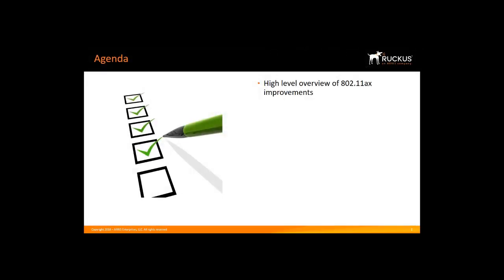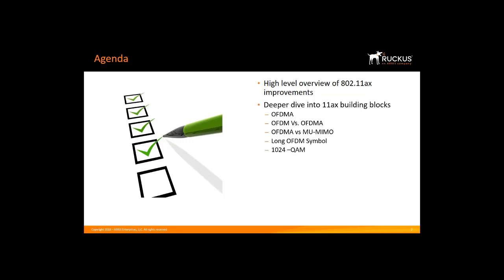We'll start with a high-level overview of the building blocks of 11ax, then drill down deeper into each. This will include a discussion on OFDMA, OFDM vs. OFDMA, OFDMA vs. Multi-User MIMO, Long OFDM Symbol, 1024 QAM, BSS Coloring, Target Wake Time, IEEE, Wi-Fi Alliance, and Commercial Activities, finishing with some use cases.